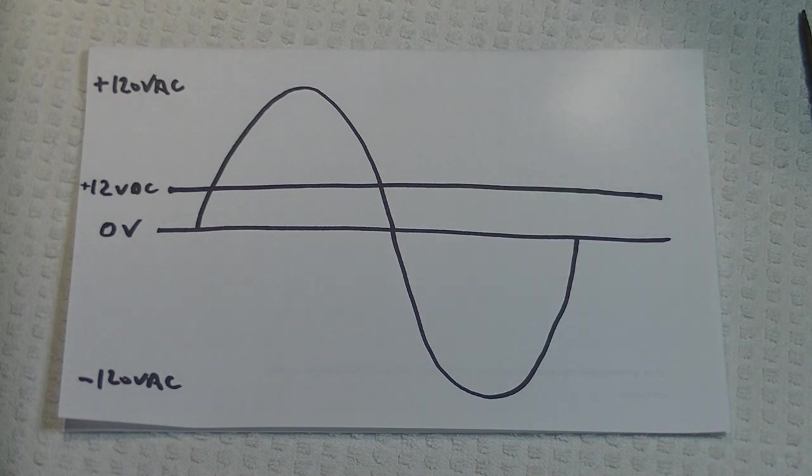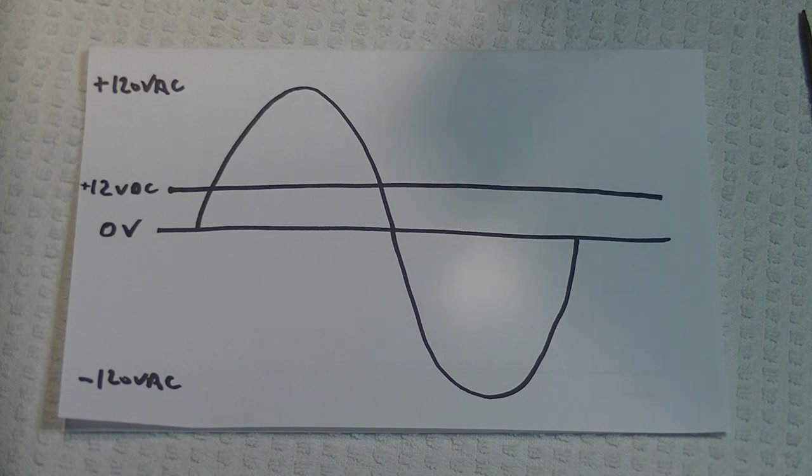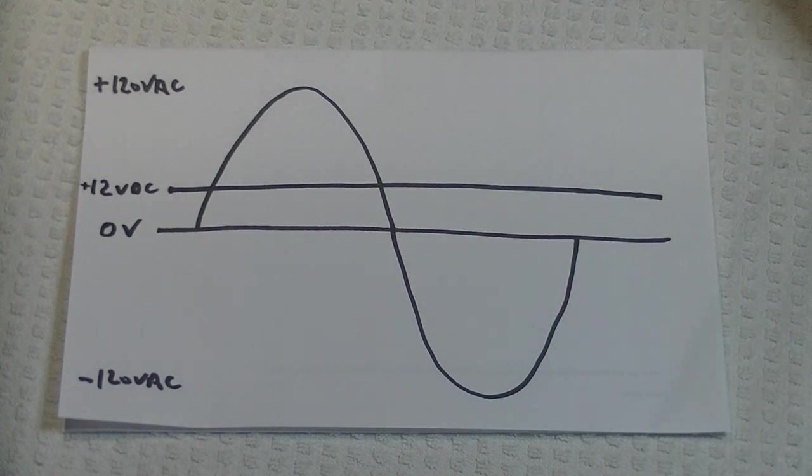Okay, every piece of audio gear that requires power pretty much needs rectification. The reason is simple. Our house mains power of 110 to 240 volts AC is alternating current, and our electronic circuits operate on DC, or direct current. Let's take a quick look at a sketch I've made.